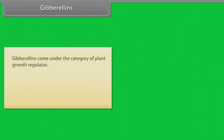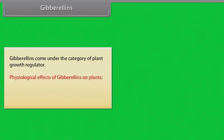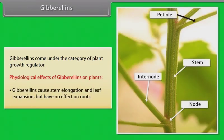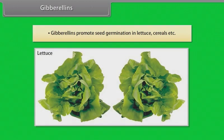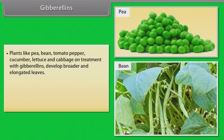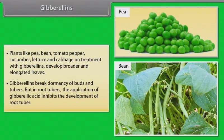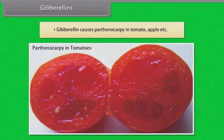Gibberellins. Gibberellins come under the category of plant growth regulator. Physiological effects of gibberellins on plants: gibberellins cause stem elongation and leaf expansion but have no effect on roots. Gibberellins promote seed germination in lettuce, cereals, etc. Plants like pea, bean, tomato, pepper, cucumber, lettuce, and cabbage on treatment with gibberellins develop broader and elongated leaves. Gibberellins break dormancy of buds and tubers. But in root tubers, the application of gibberellic acid inhibits the development of root tuber. Gibberellins cause parthenocarpy in tomato, apple, etc.